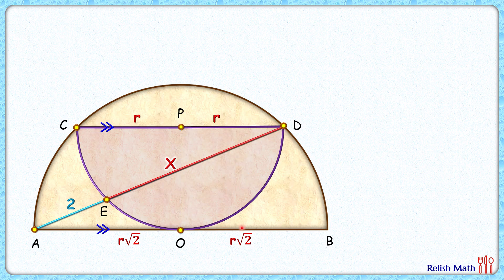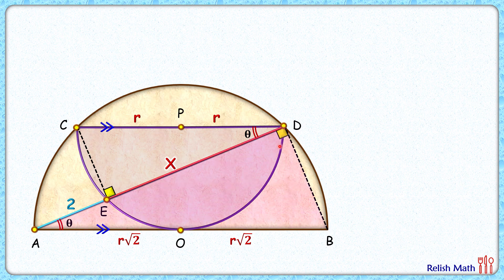Let's remove all the unwanted data and join DB. If you look carefully, AB is the diameter, and we know the diameter always subtends an angle of 90° at the circumference. Again, let's join CE. For the purple semicircle, CD is the diameter and also subtends 90°. Since CD and AB are parallel and AD is a transversal, these angles are alternate interior angles — if one is theta, the other is also theta. This red triangle and this green triangle both have angles 90° and theta, so the red triangle is similar to the green triangle.